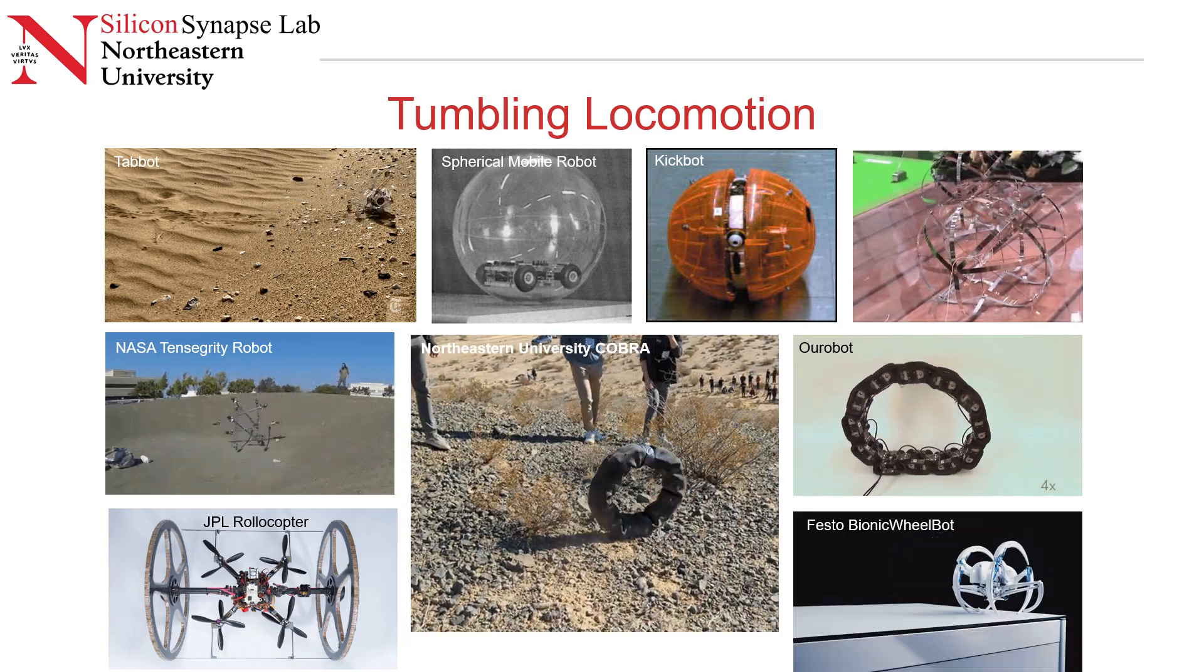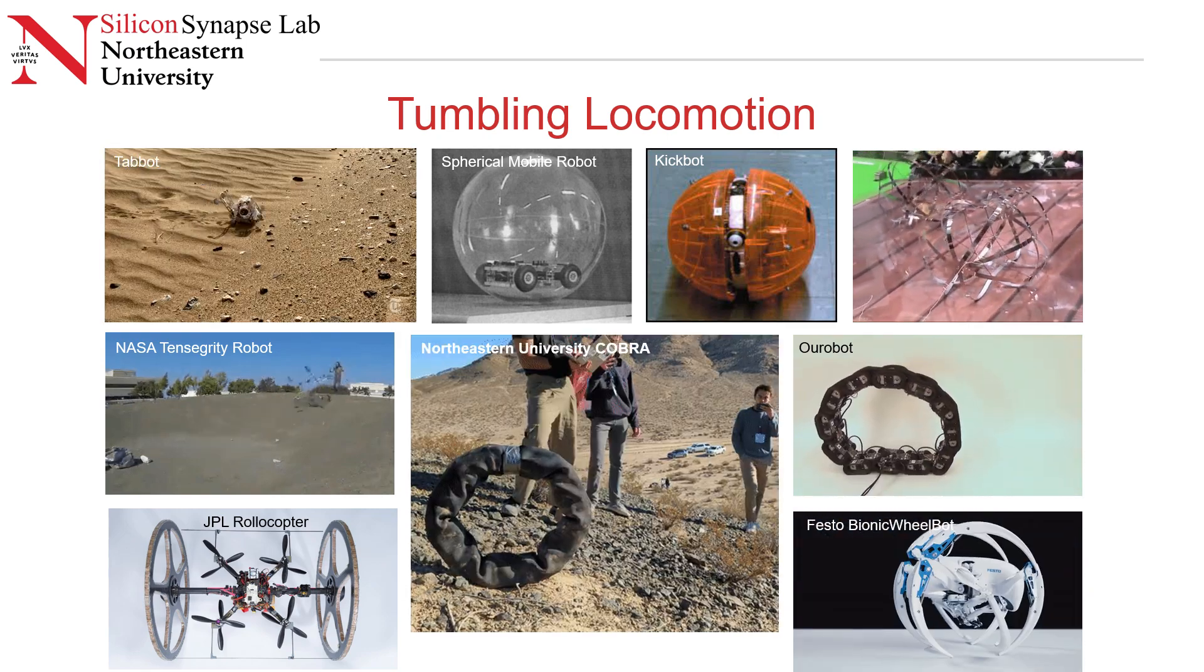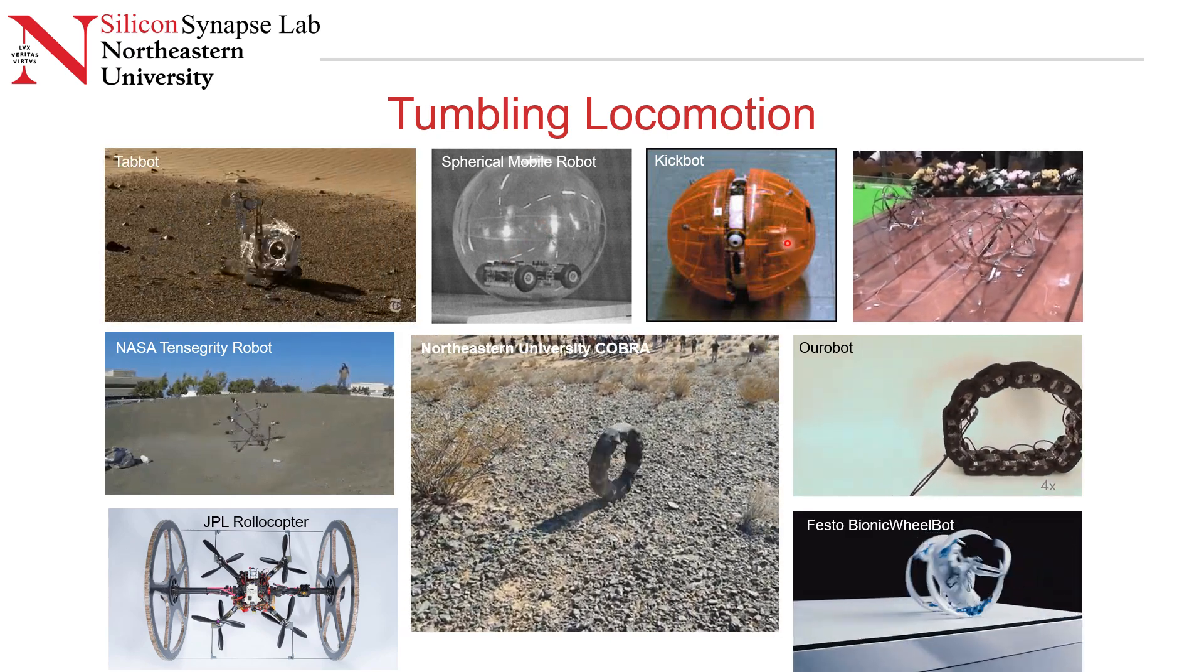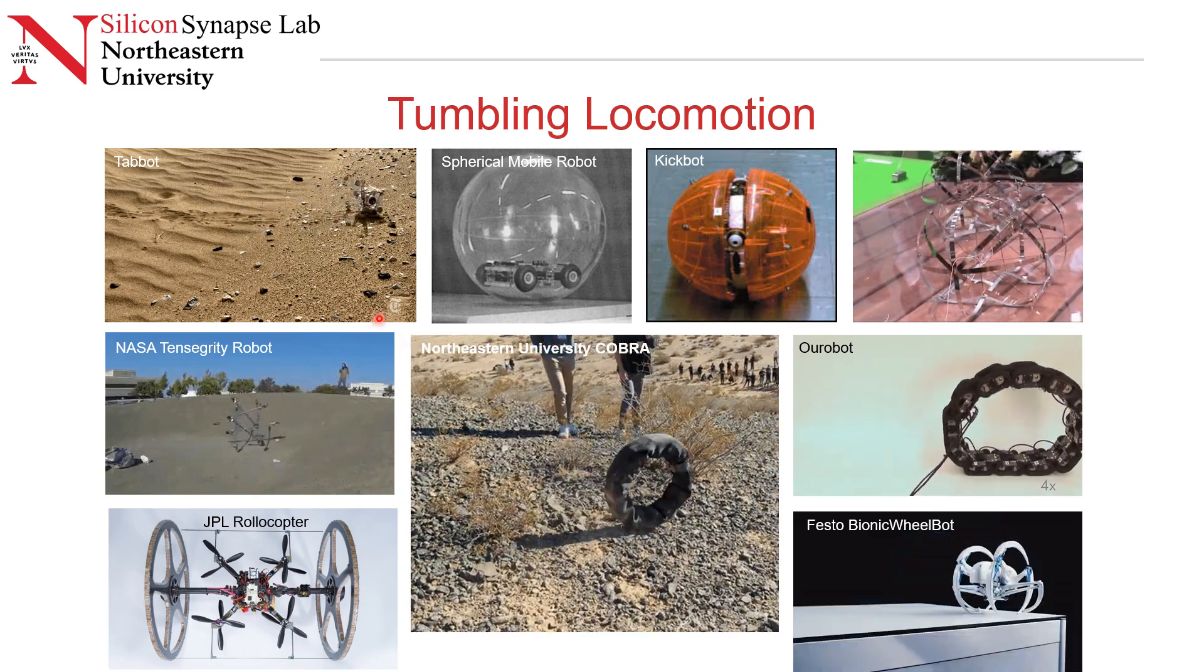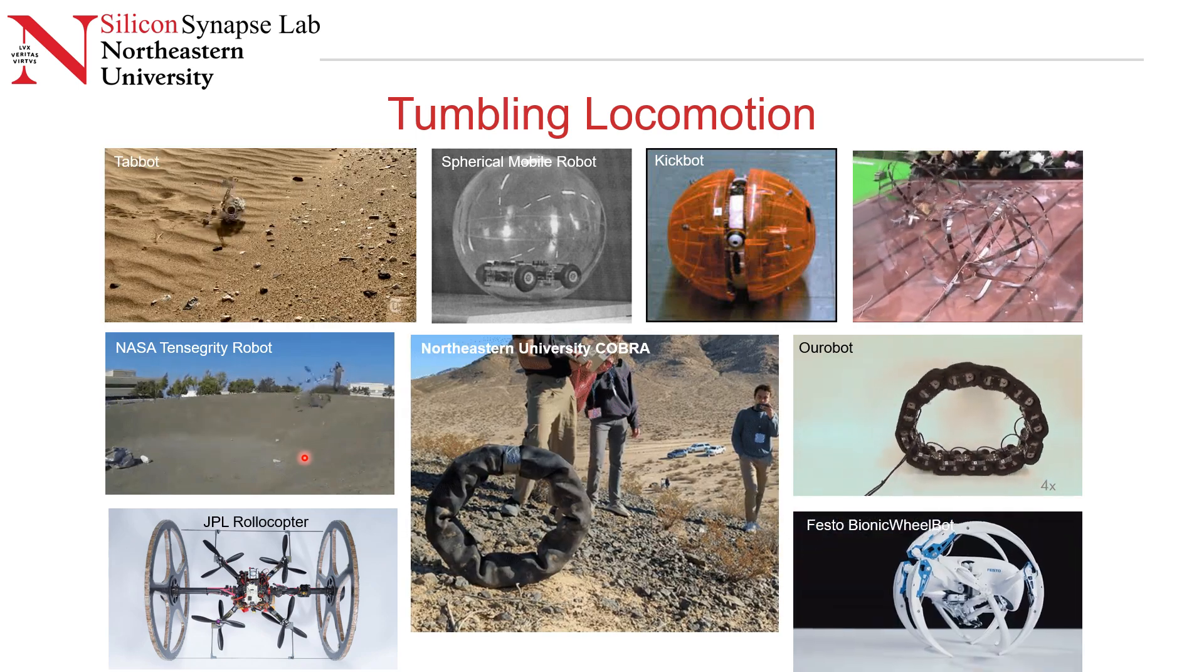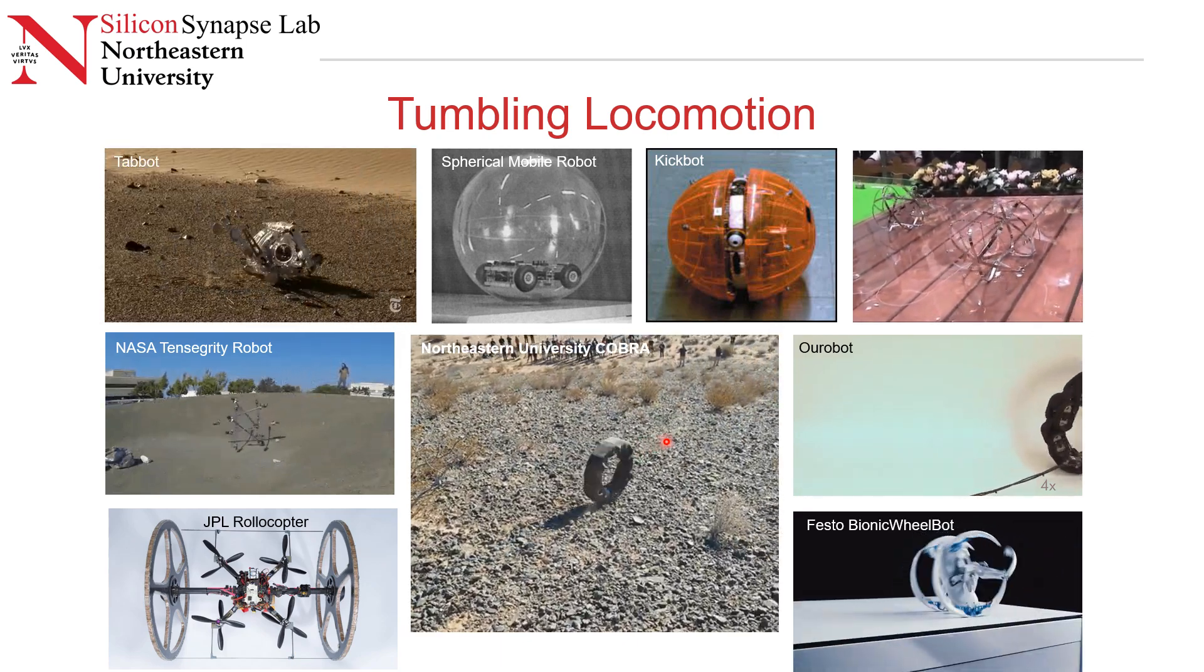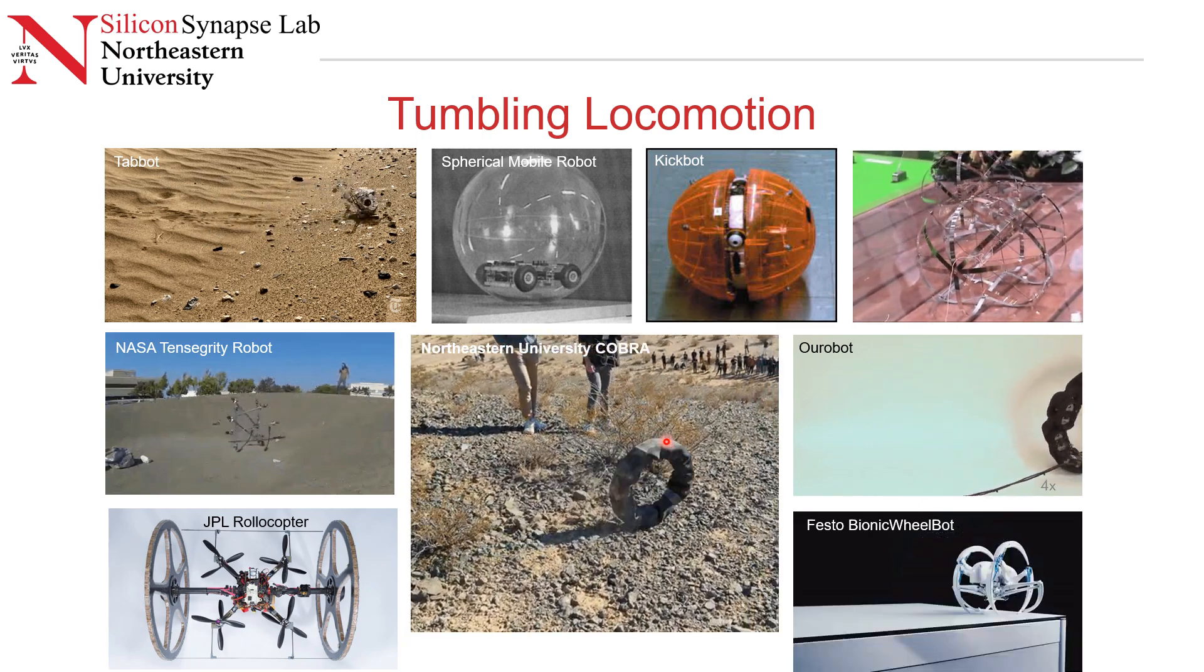This work deals with closed-loop control for tumbling locomotion. As you can see in the slide, there's different kinds of robots, each of which use a different modality for generating this rolling motion. Some, such as the spherical mobile robot and kickbot, use wheel-like structures. Whereas others, such as Aurobot and NASA Tensegrity robot, use posture manipulation for generating this rolling locomotion. At the center here is Northeastern University's Cobra. This is the platform that I will be focusing on. Cobra is one of the few examples that uses dynamic posture manipulation to control its heading angle at high speeds.